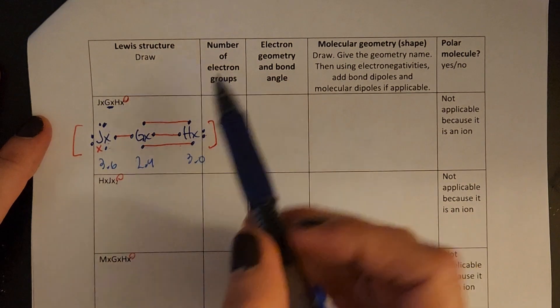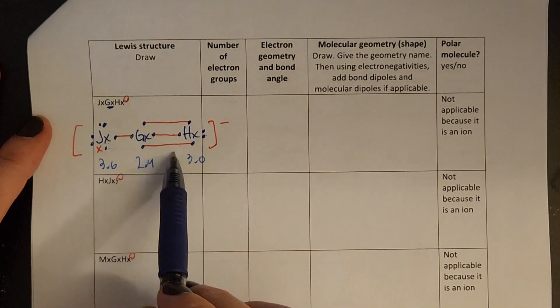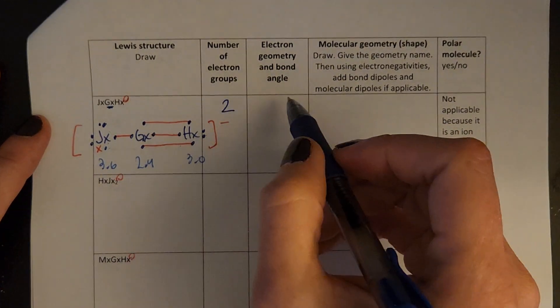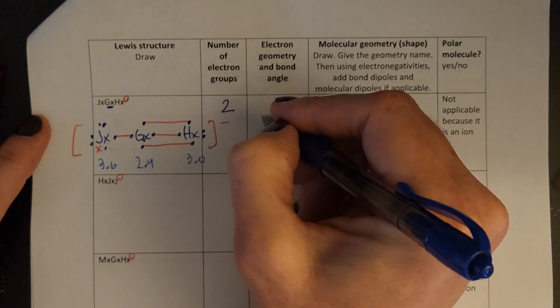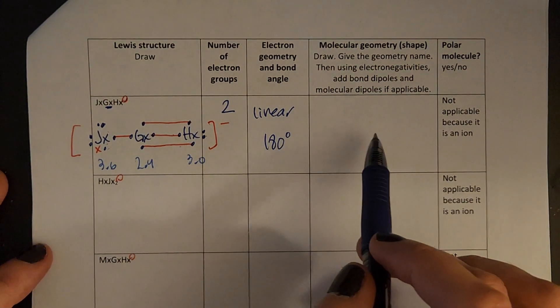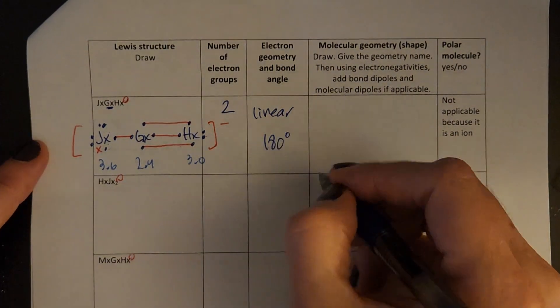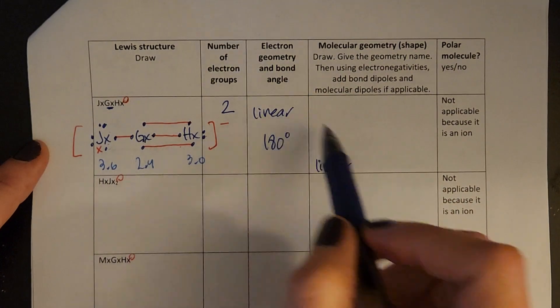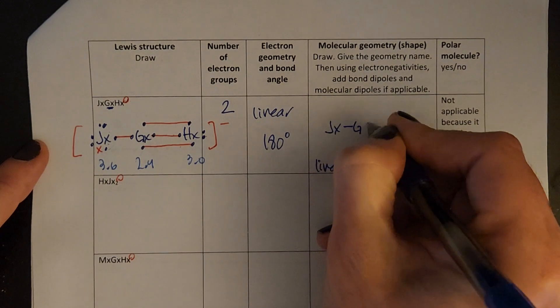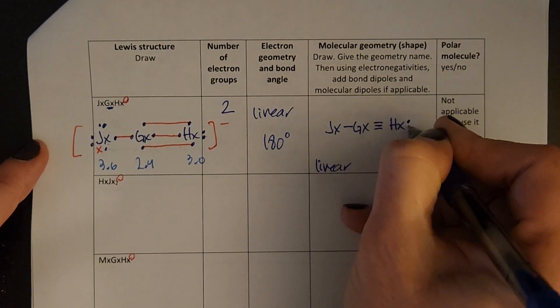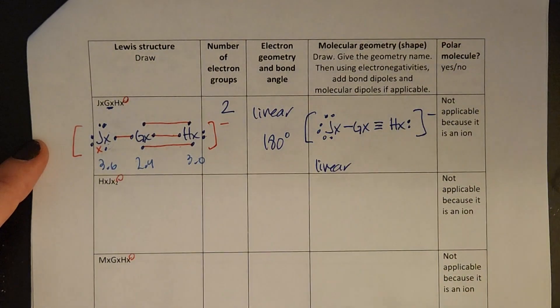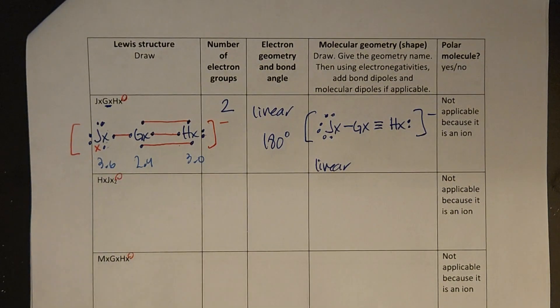Number of electron groups around the center. If I look at Gx, I've got a triple bond but that only counts as one group, and then a single bond. So I've got two electron groups. That always leads me to an electron geometry that is linear with a 180 degree angle. And then when I go to draw the molecular geometry, we know that a linear electron geometry always leads us to a linear molecular geometry. So let's just say I redraw this a little bit more neatly. Same exact structure, same electrons, same brackets.